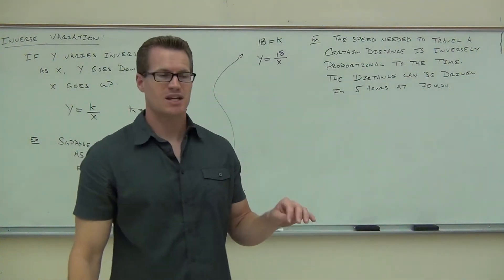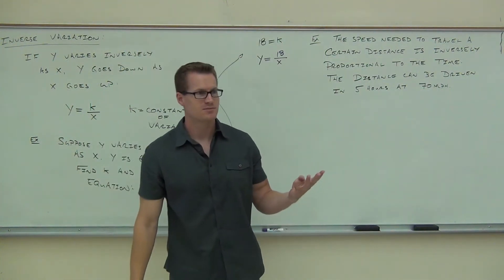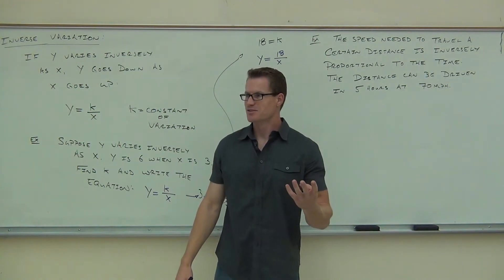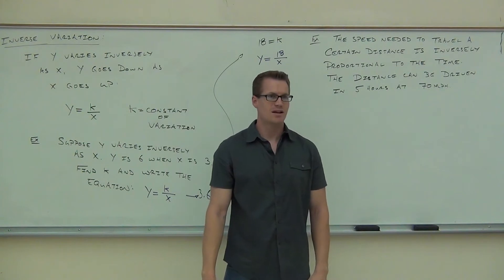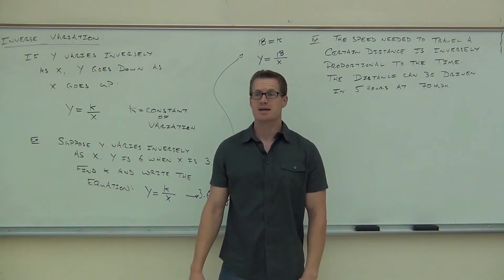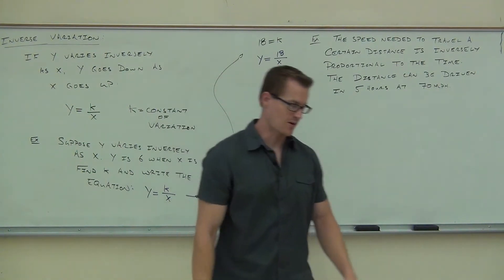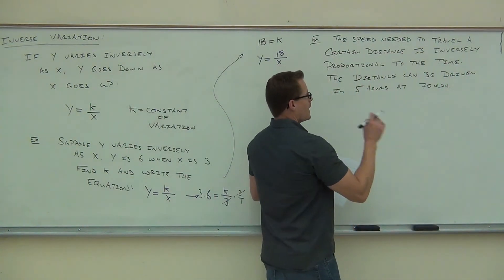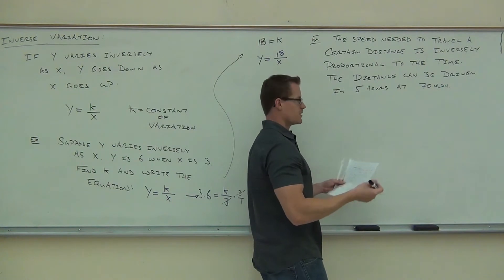How fast would you have to go to make the same trip in four hours? You have to go significantly faster. So you're like, okay, I usually drive down to LA — it takes me five hours to get there if I go 70. Now let's say I need to make it down there in four hours. How fast am I going to have to push my car? How many tickets am I going to get? So how fast do you have to go to make the same trip in four hours?